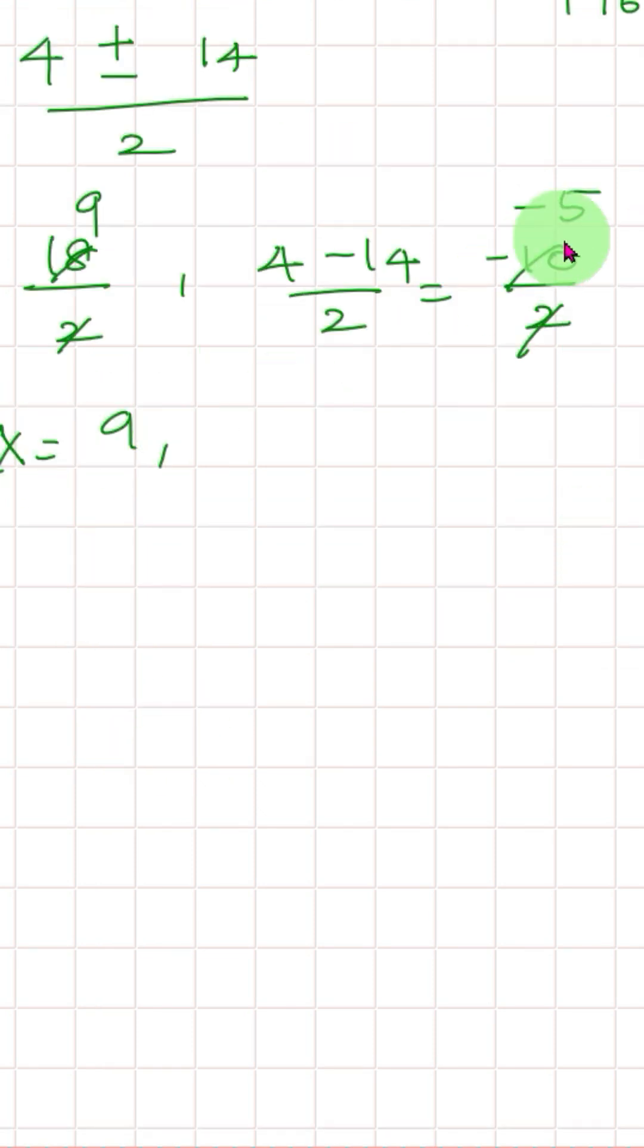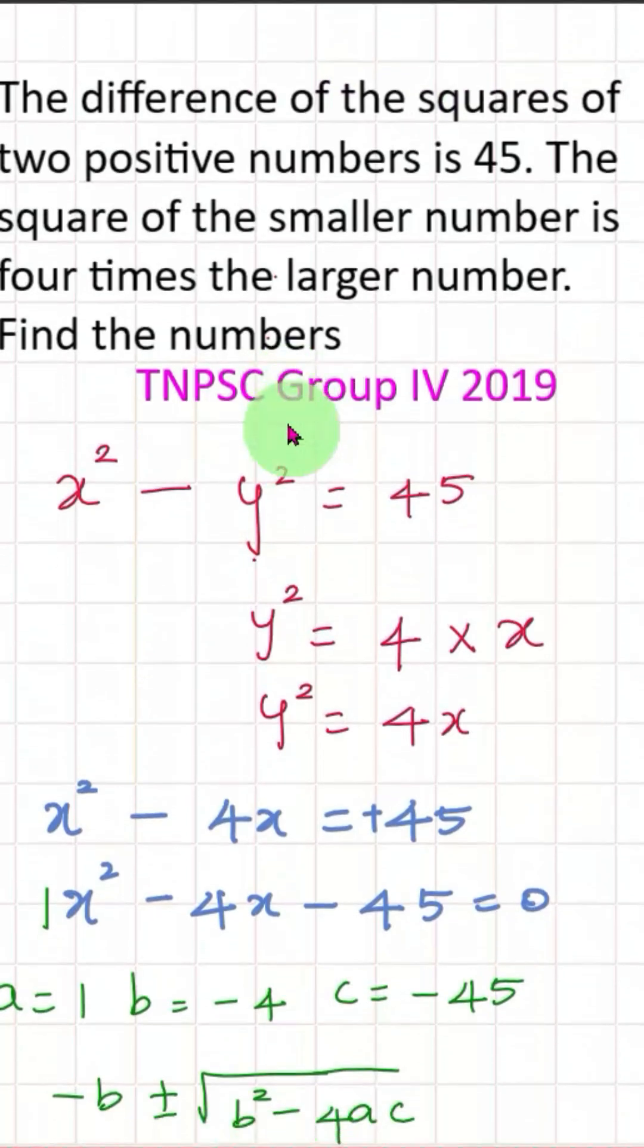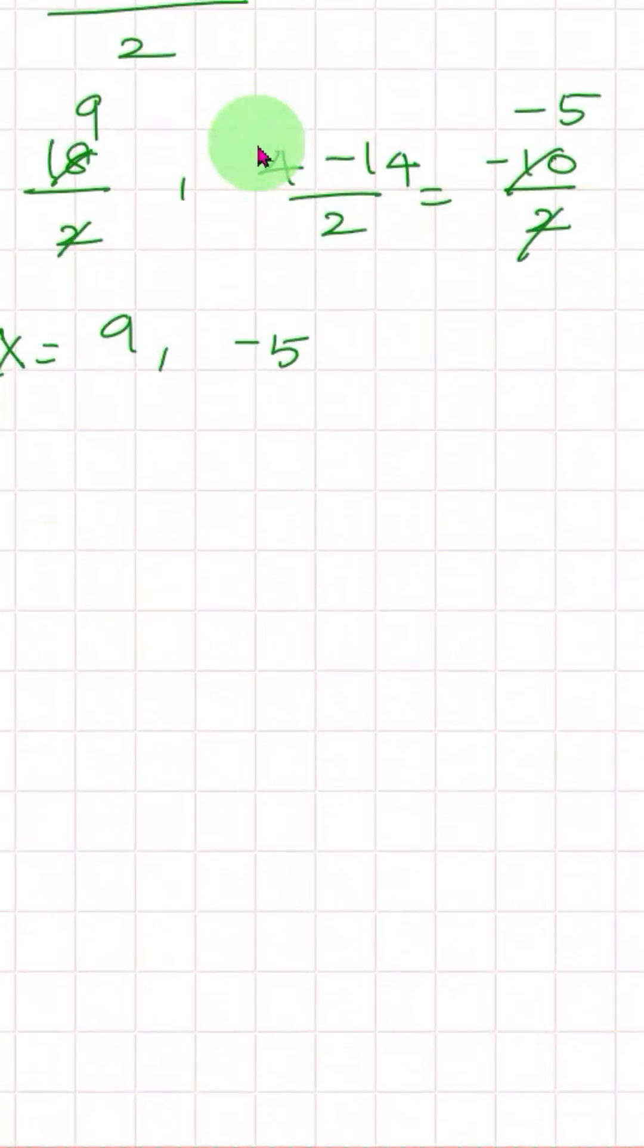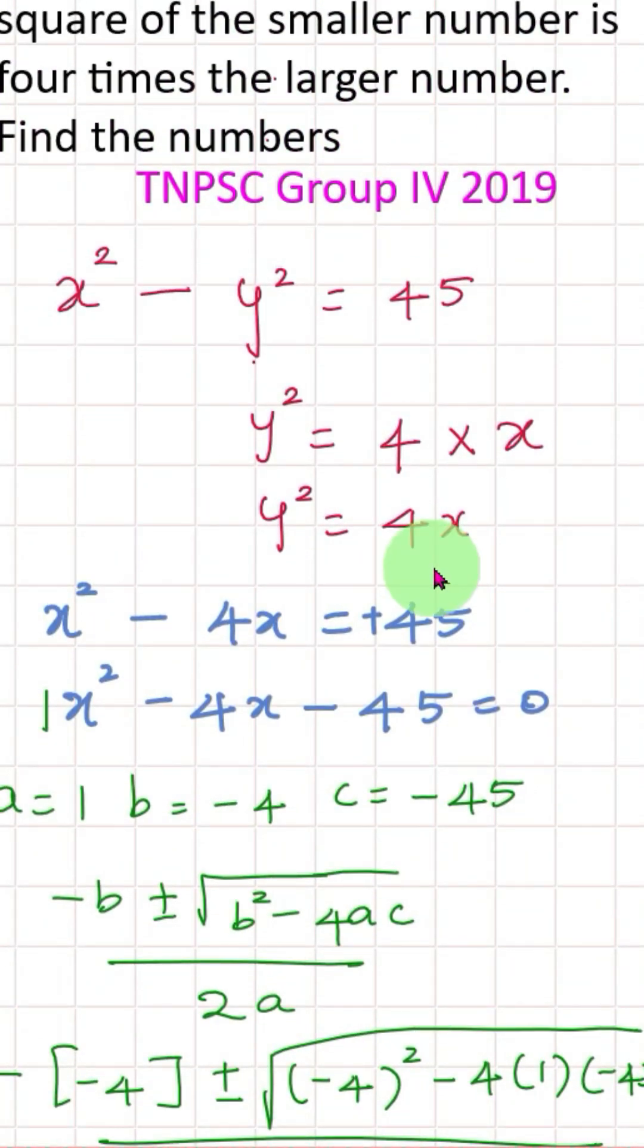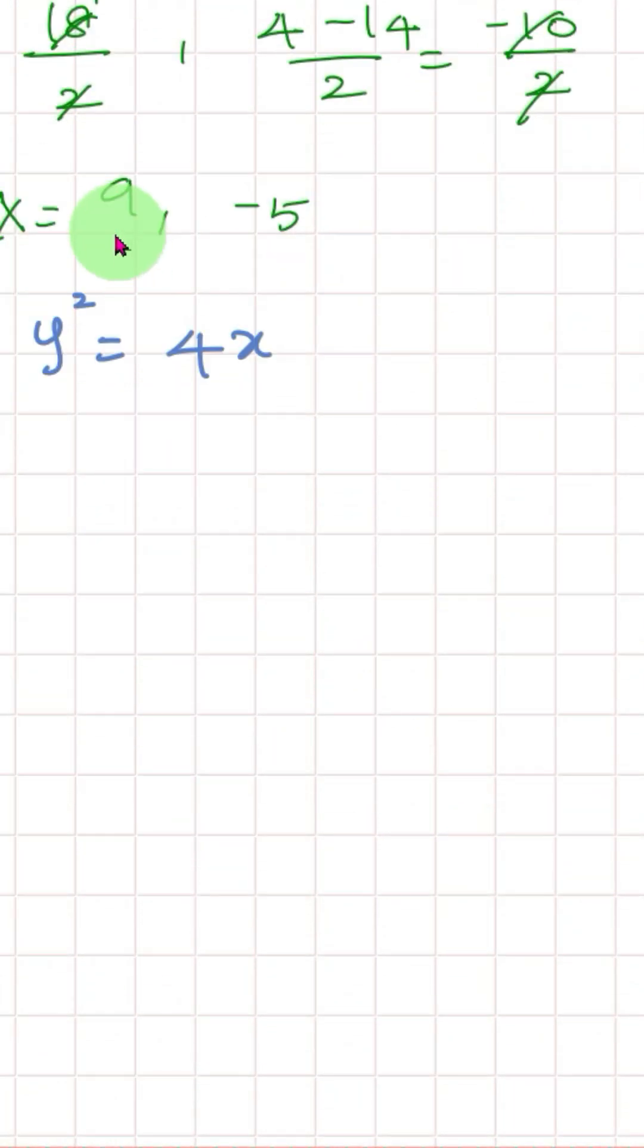x equals 9 or minus 5. Minus 5 is not a chance because the question says positive numbers. So x value is 9. We substitute the other value. y square equals 4x. x is 9, so y square equals 4 into 9. y square equals 36. So y equals square root of 36. y equals 6.